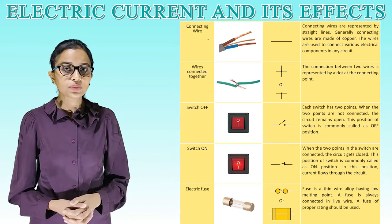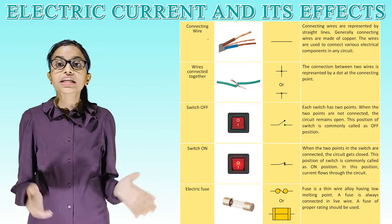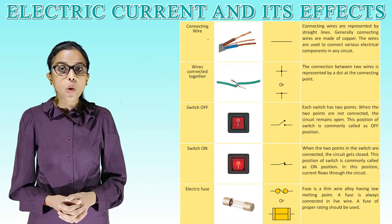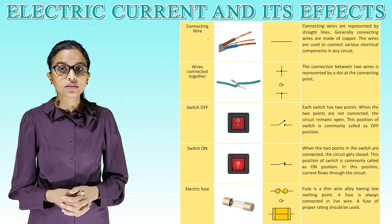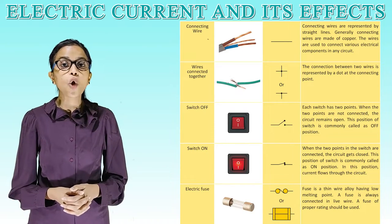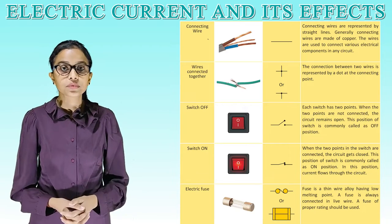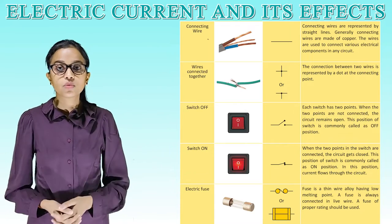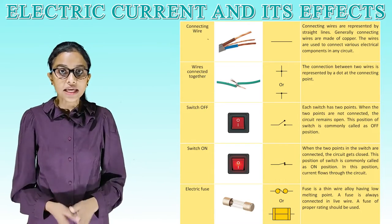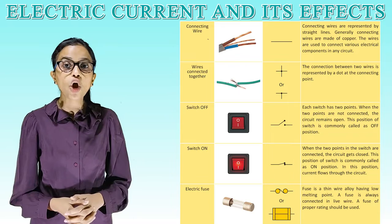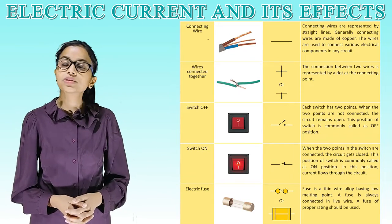Switch off — here is its picture and symbol. Each switch has two points. When the two points are not connected, the circuit remains open. This position of the switch is commonly called the off position. Switch on — when the two points in the switch are connected, the circuit gets closed. This position is called the on position. In this position, current flows through the circuit.